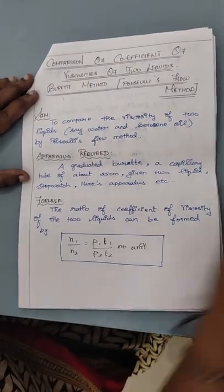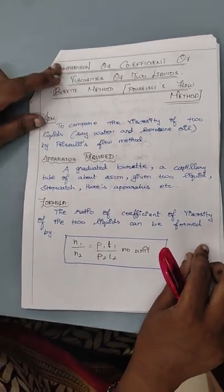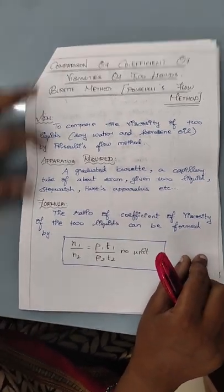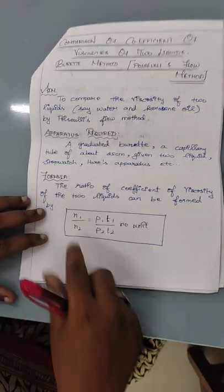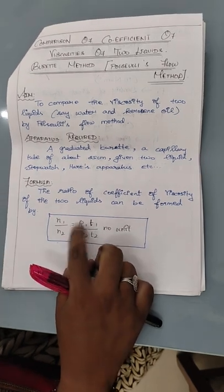We are going to see the calculation for comparison of coefficient of viscosity of two liquids. The liquids I am going to take are water and kerosene. And the formula is nu1 by nu2 is equal to rho1 T1 divided by rho2 T2. Rho is going to be the density.